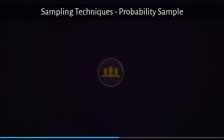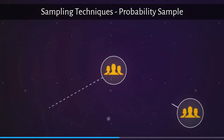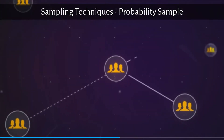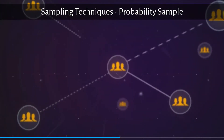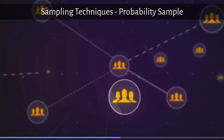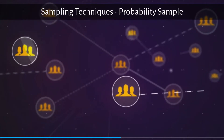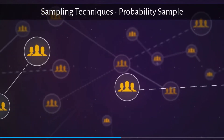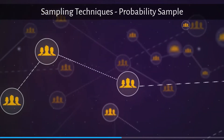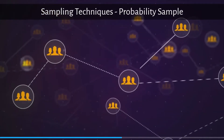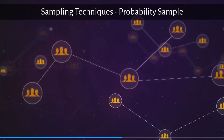Universe is the population from which the sample will be drawn. Sample is a subset of the population, and there are a few different options we have here.